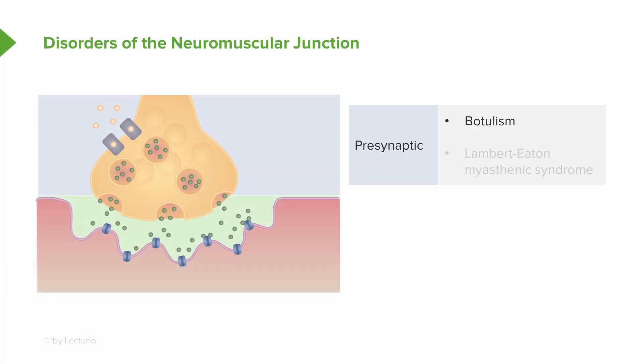So let's take a look at the junction and see what we're talking about. This is the connection between the nerve and the muscle, where electrical signals and an action potential are converted to chemical signals in the synaptic cleft. And when we're localizing the conditions in this area, we think of the presynaptic problems and the postsynaptic problems.